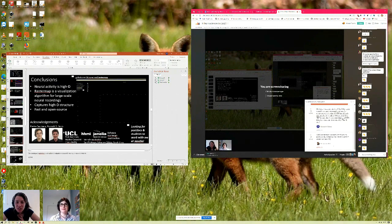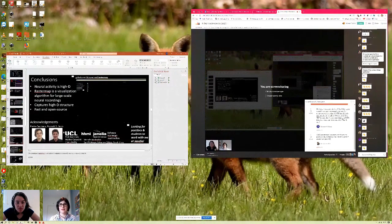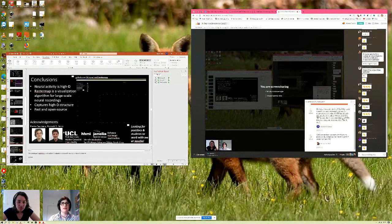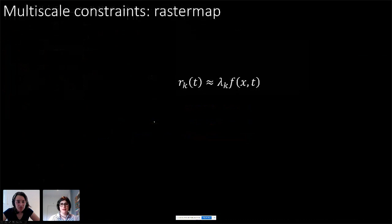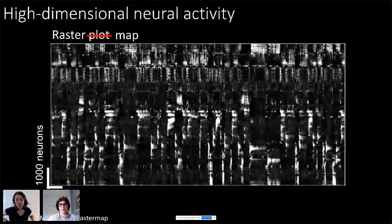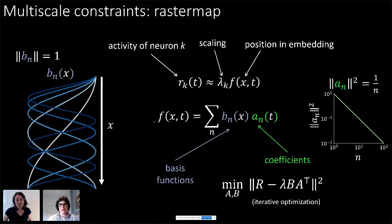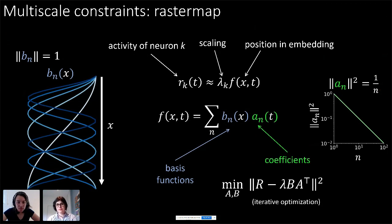There's a question: did I understand correctly that we can apply Rastermap to arbitrary data, even non-neural? Yes — you can apply it to any high-dimensional data set. There's a parameter where the power law coefficient — one over n — can be changed to one over n to any arbitrary alpha. This lets you adjust how much you want to preserve local structure versus global structure, and this idea could be extended to other methods like regression to capture high-dimensional structure.